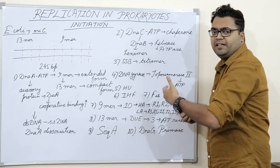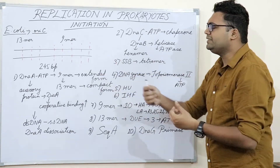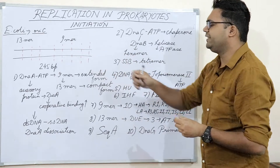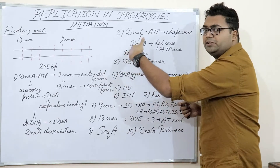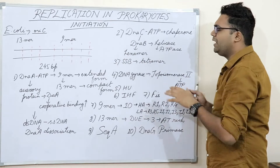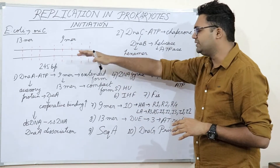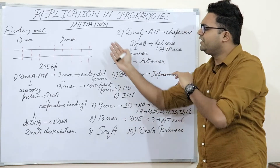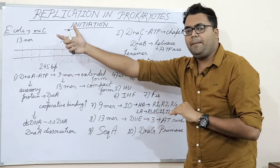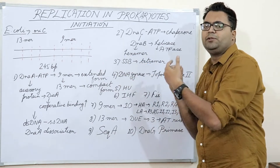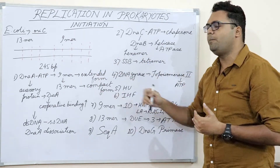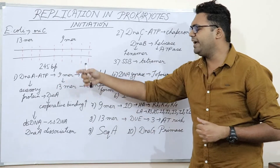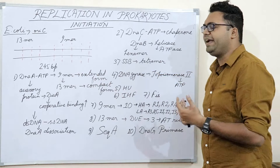The energy released from ATP hydrolysis is used to dissociate the AT base pair sequences. First, DnaA binds with the 9mer sequences in the extended conformation, then it switches to 13mer sequence binding. While binding to the 13mer sequences, it switches its conformation from extended to the compact form. After that, ATP dissociation takes place, and DiaA recruits more and more DnaA.